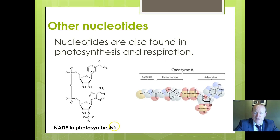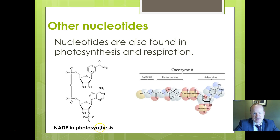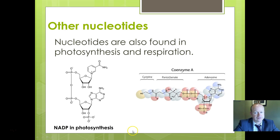Some other key nucleotides to be aware of rather than knowing in detail: you need to be aware of something called NADP, used in photosynthesis, and something called coenzyme A. Be aware that NADP is a nucleotide and that coenzyme A is a nucleotide. You do not need to learn their structures.